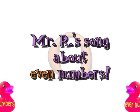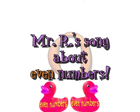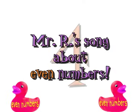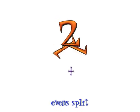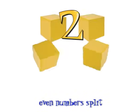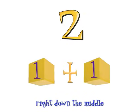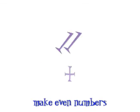Split them up, even split down the middle. Split them up, even split, say this rhyme. Even numbers split right down the middle. Half and half make even numbers every time. 0, 2, 4, 6, 8.